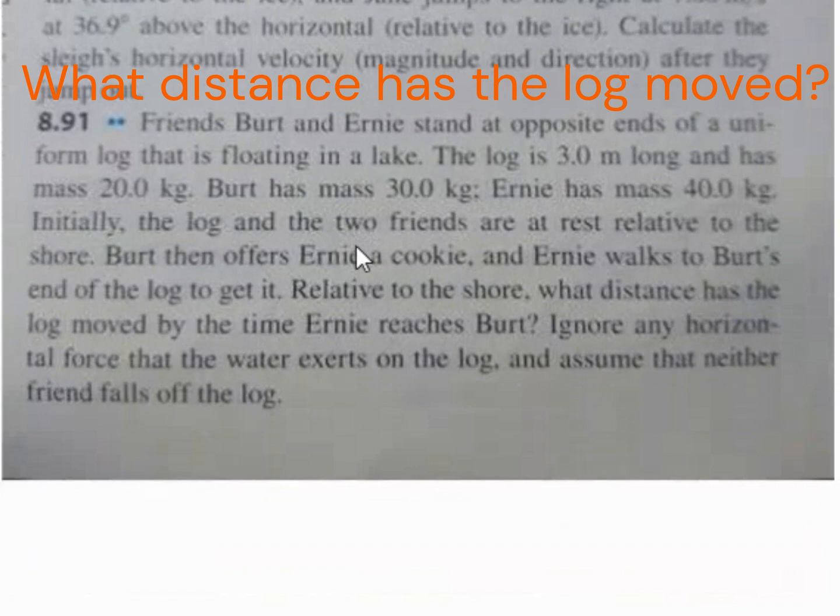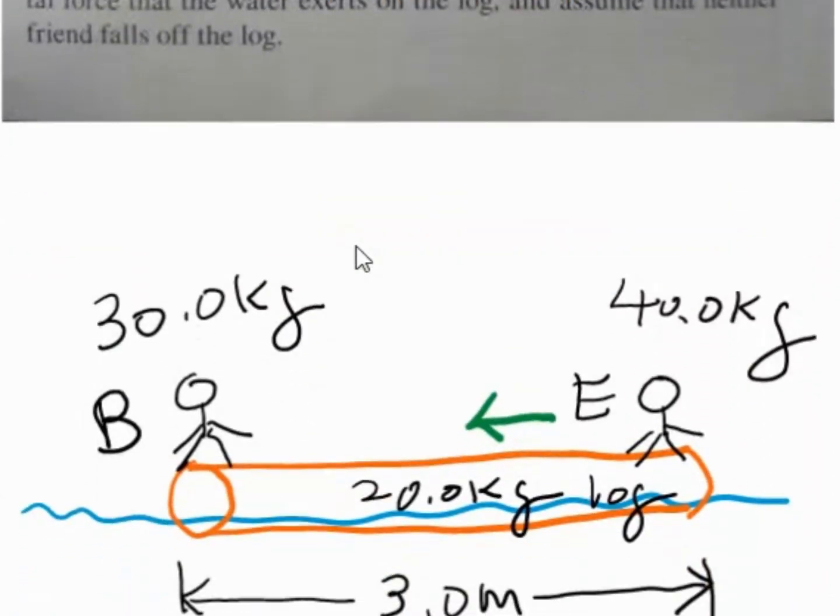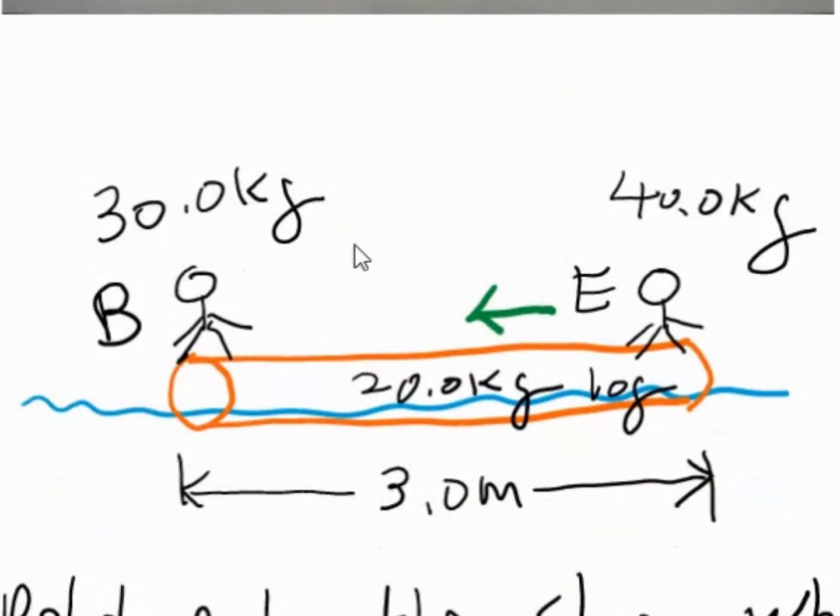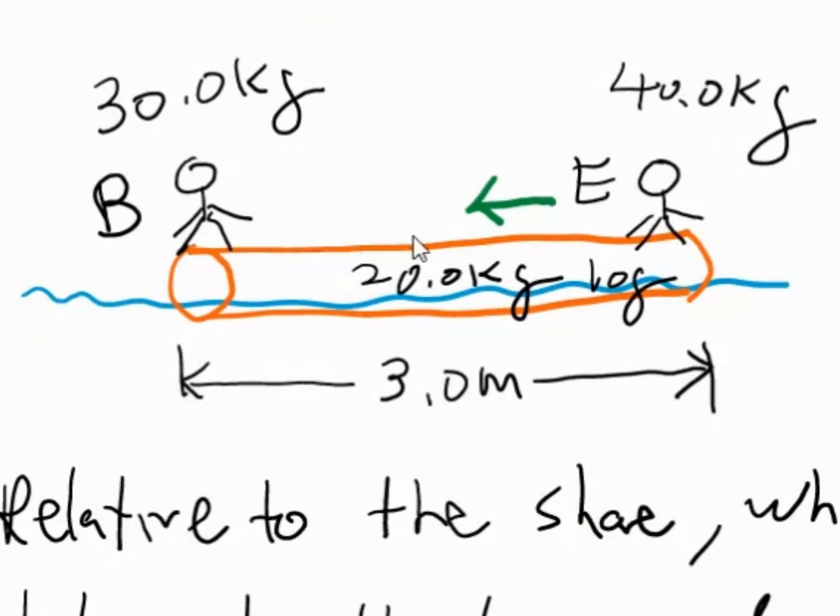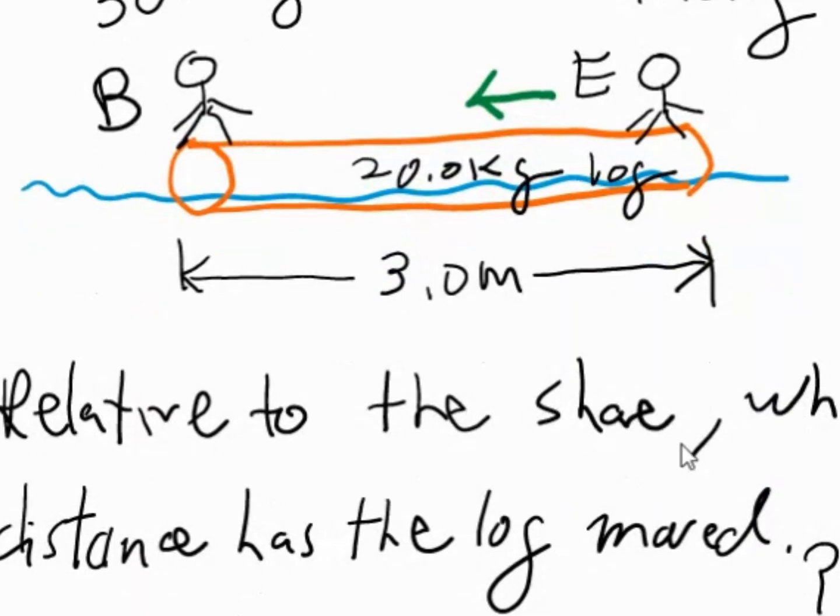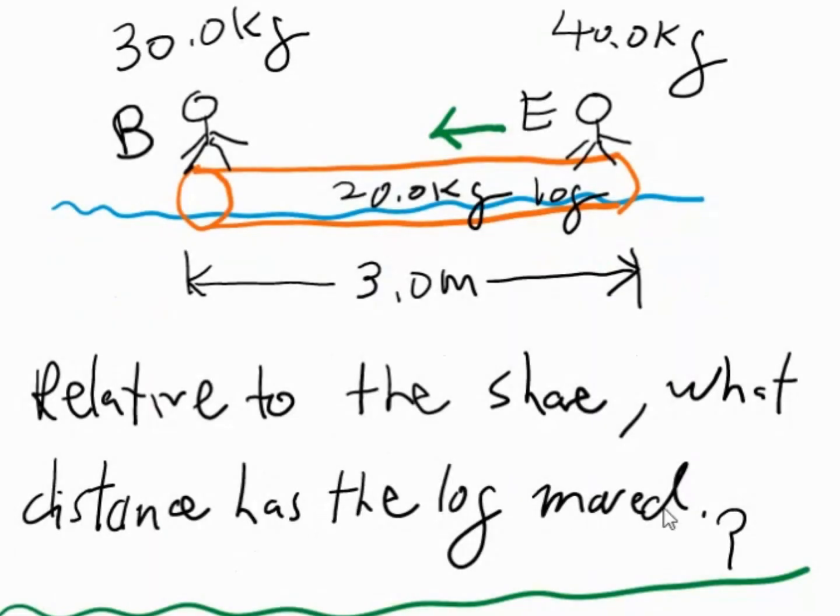And we want to determine how much has the wooden log moved relative to the shore. So here's an illustration of the problem. You have the two friends, Burr and Ernie. So here's the log on the water. And Ernie's going to move toward Burr. And we want to determine relative to the shore what distance has the log moved.